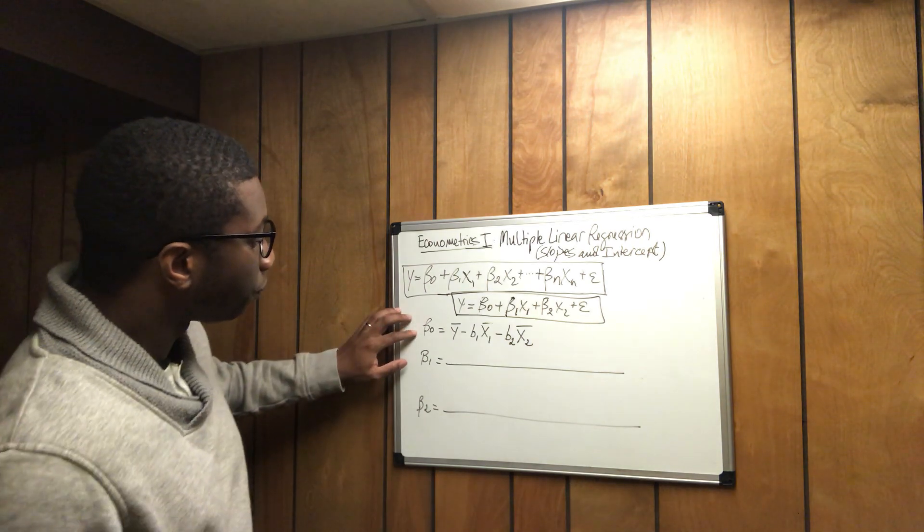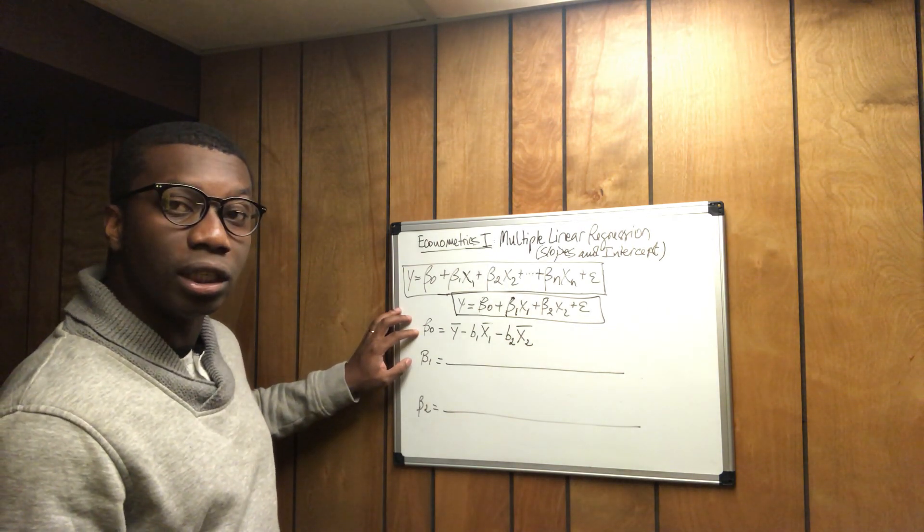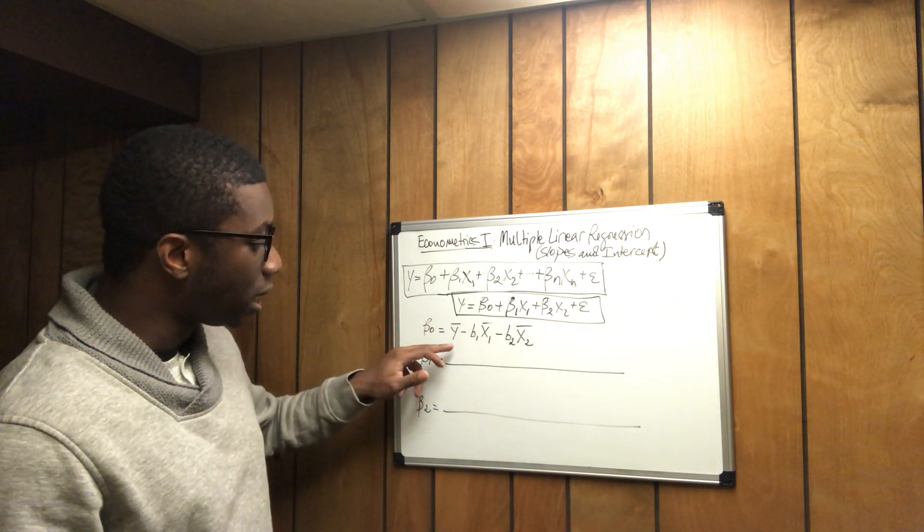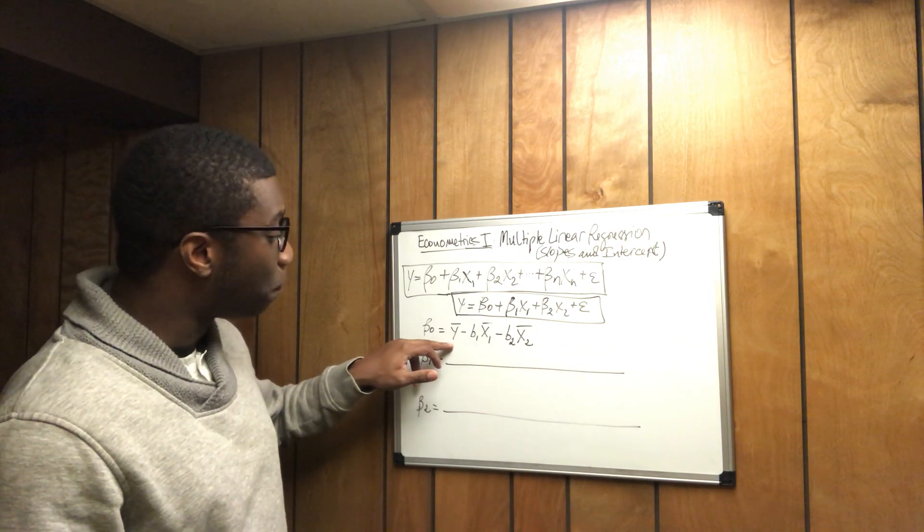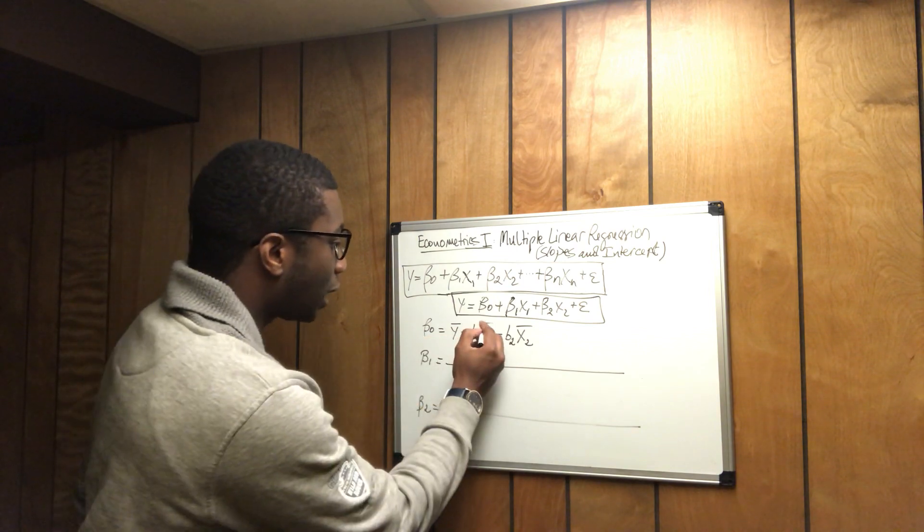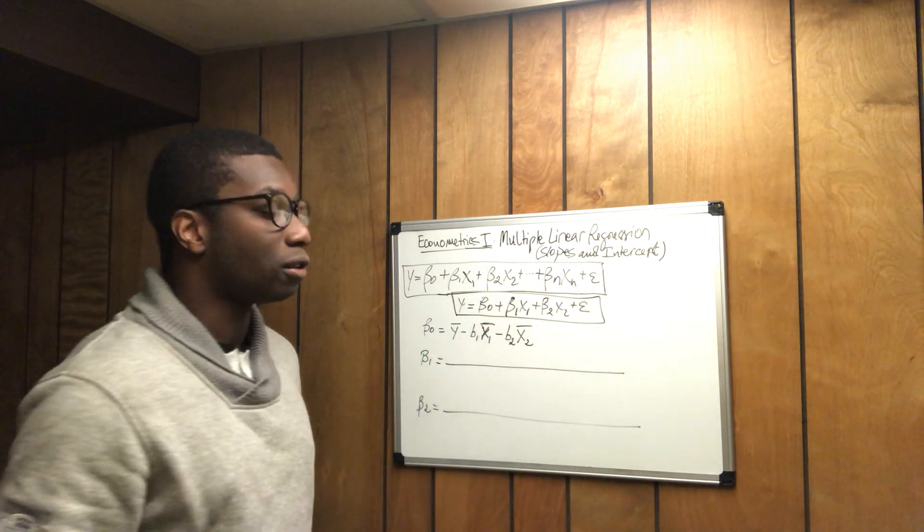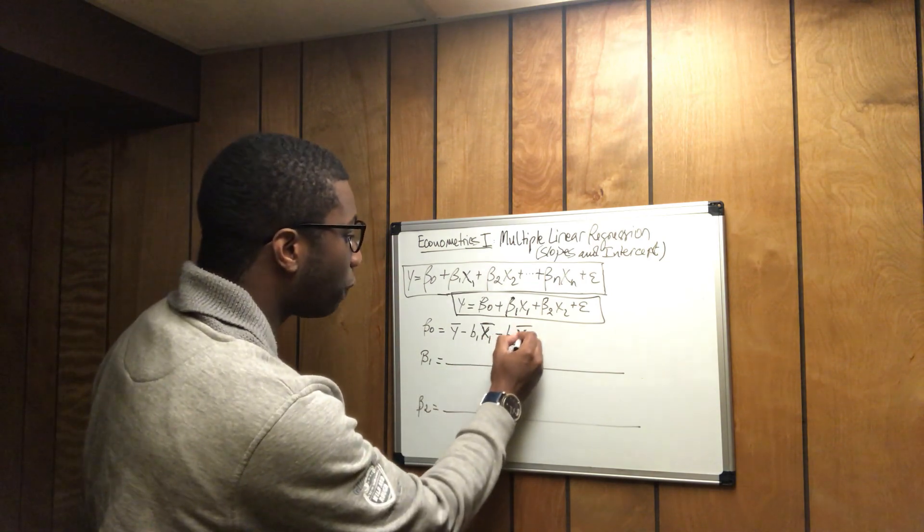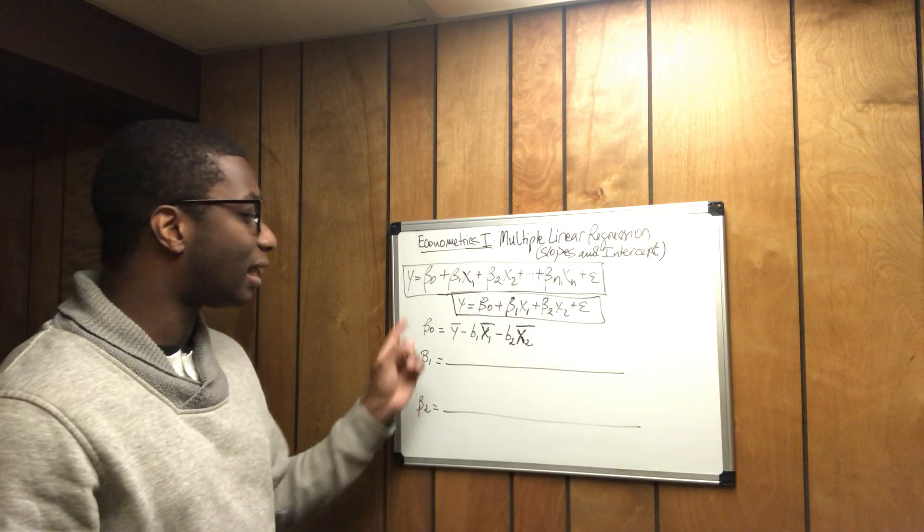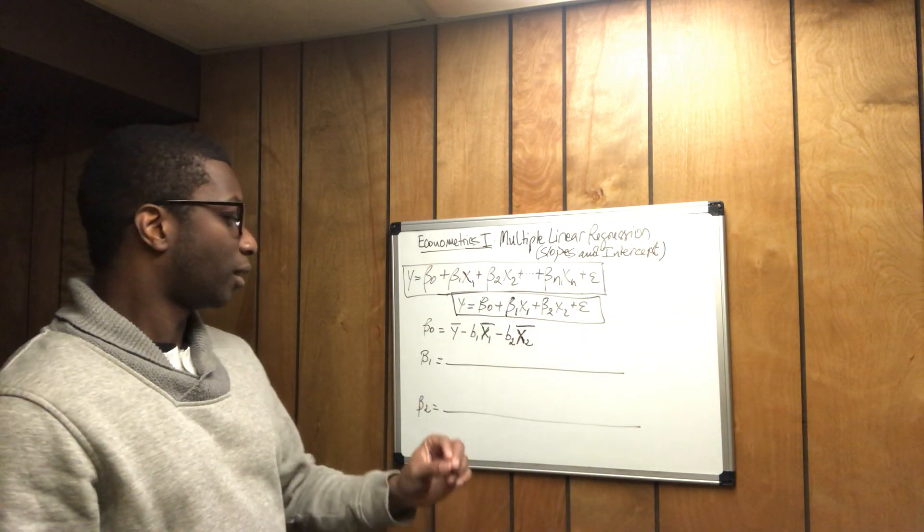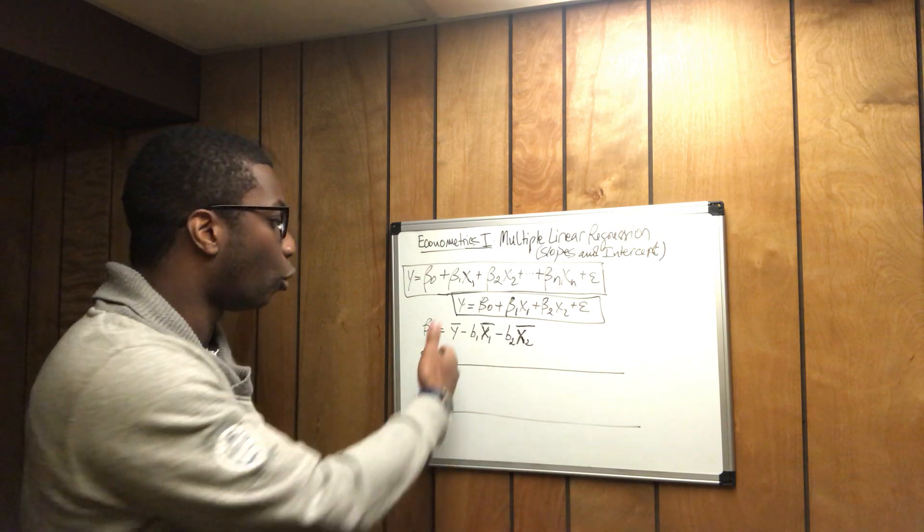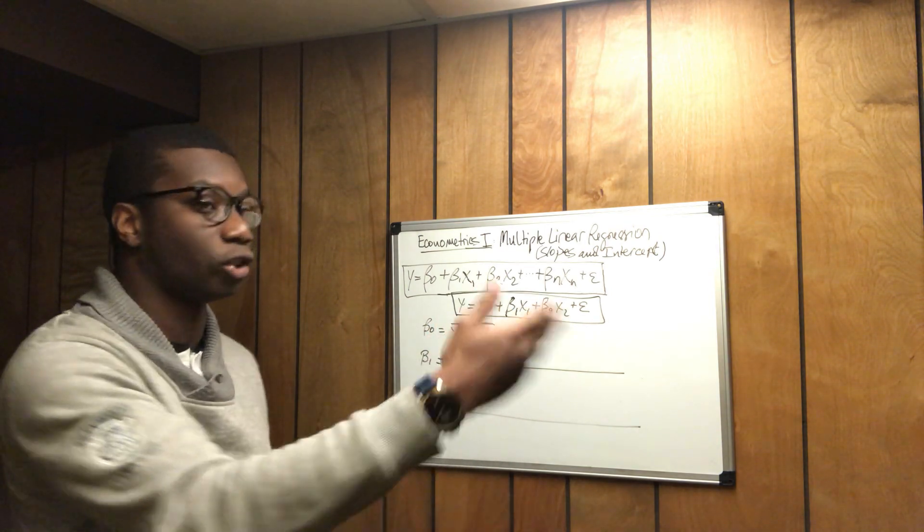So I wrote here how to calculate the intercept, which is beta 0 equals the mean of the dependent variable minus the value of beta 1 times the mean of x1 minus the value of beta 2 times the mean of x2. But you can calculate none of that unless you've determined the values of beta 1 and beta 2. Maybe yes, you can already know the mean of y, you can know the mean of x1 and x2.